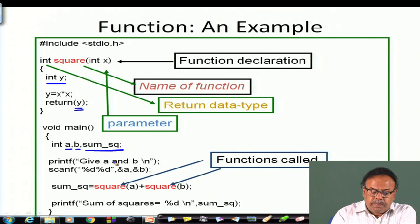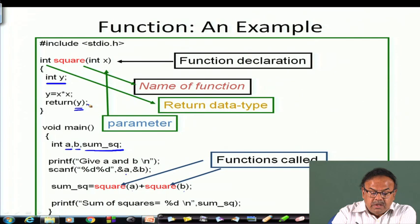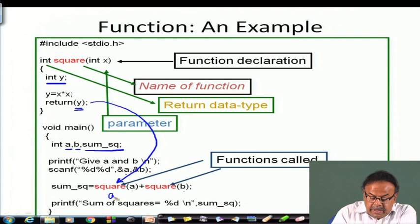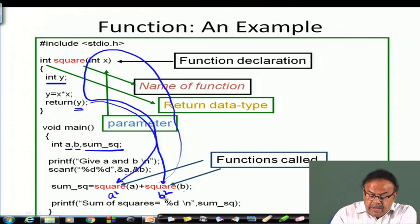Now I am calling this function twice: first with parameter a, then with parameter b. In sequence, a and b go to the argument x, and the square of a is computed. So return y will return first a squared. Then the function is called again and y is returned for b squared. These two are added and we get sum_of_square, which is then printed.